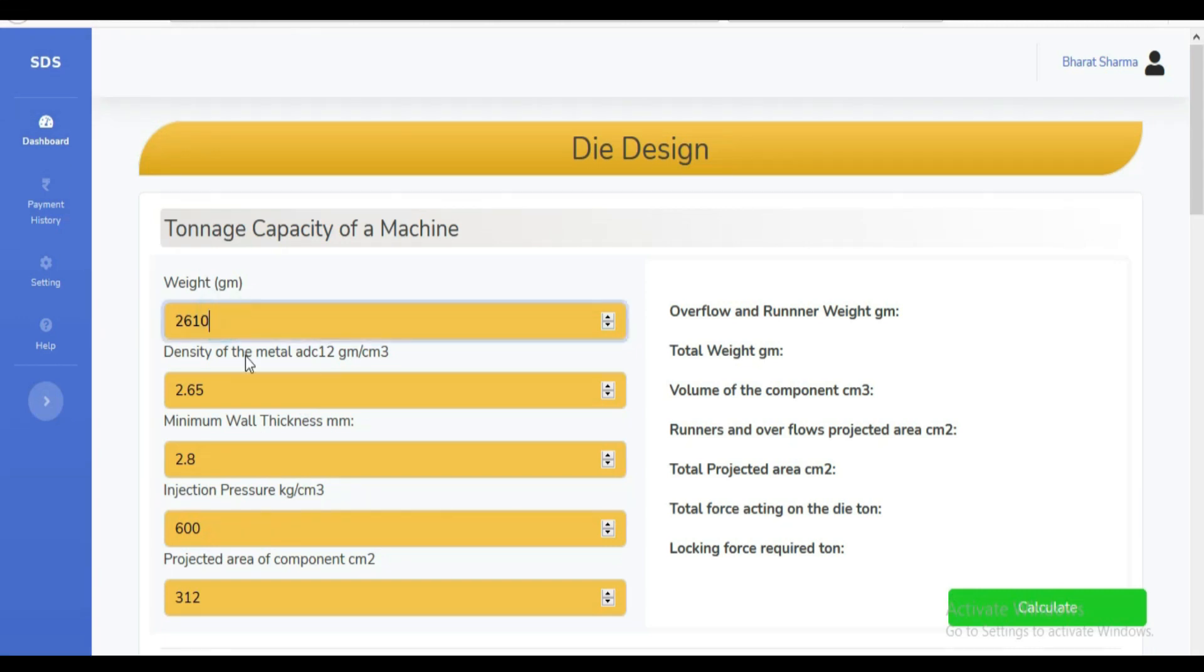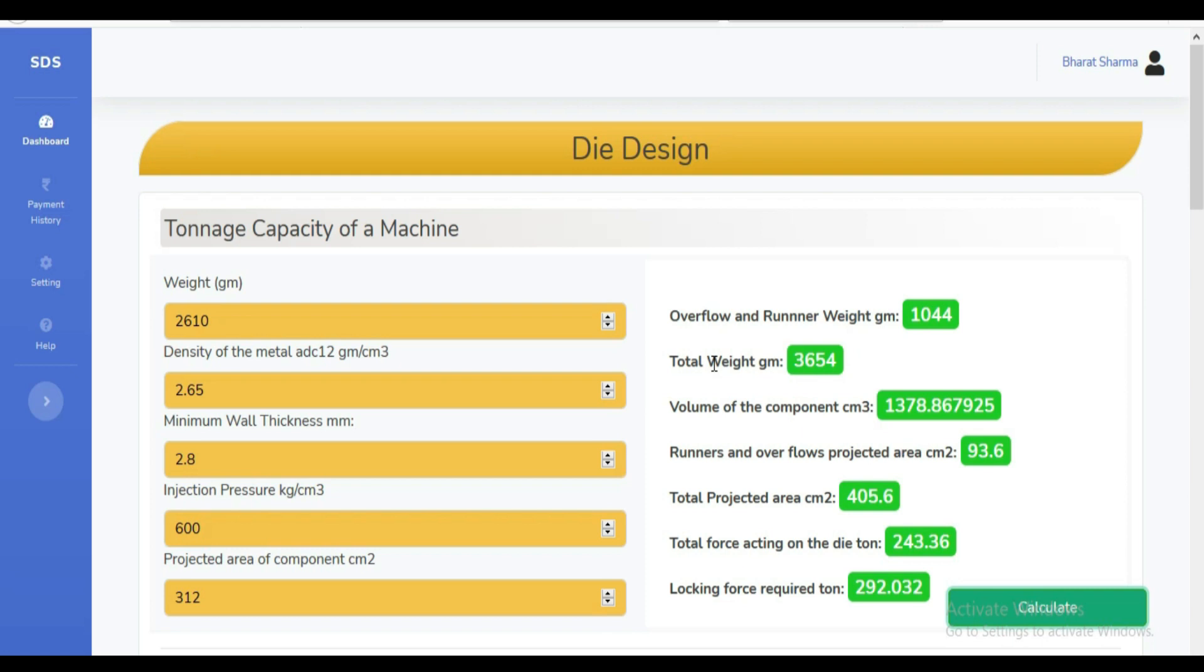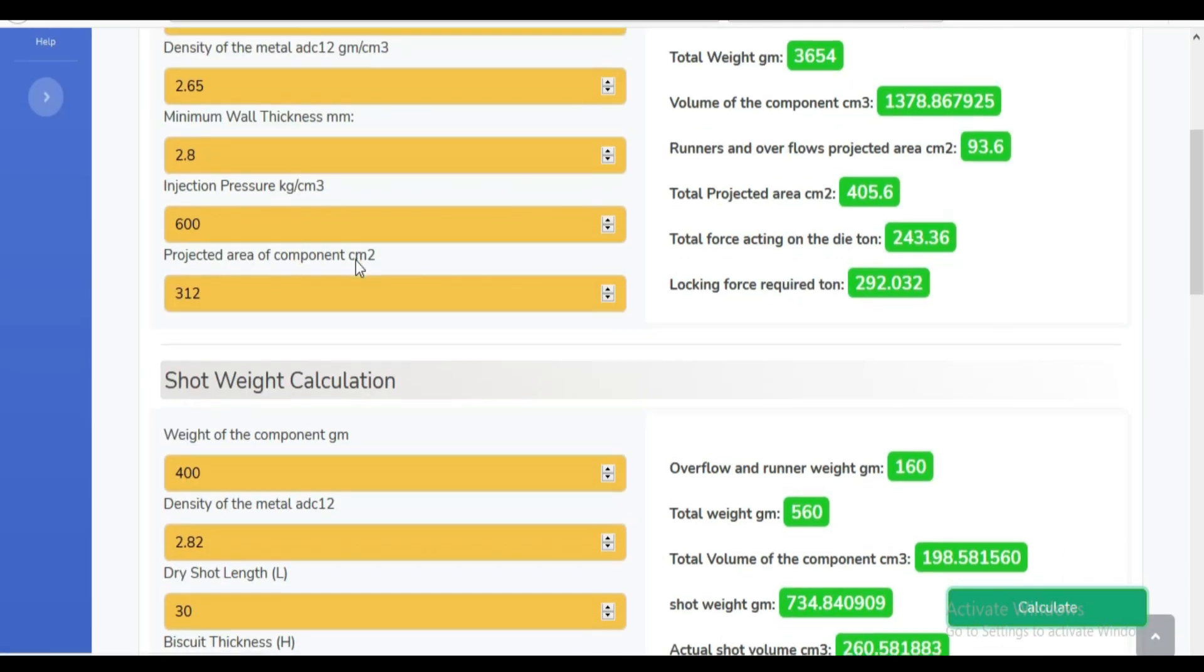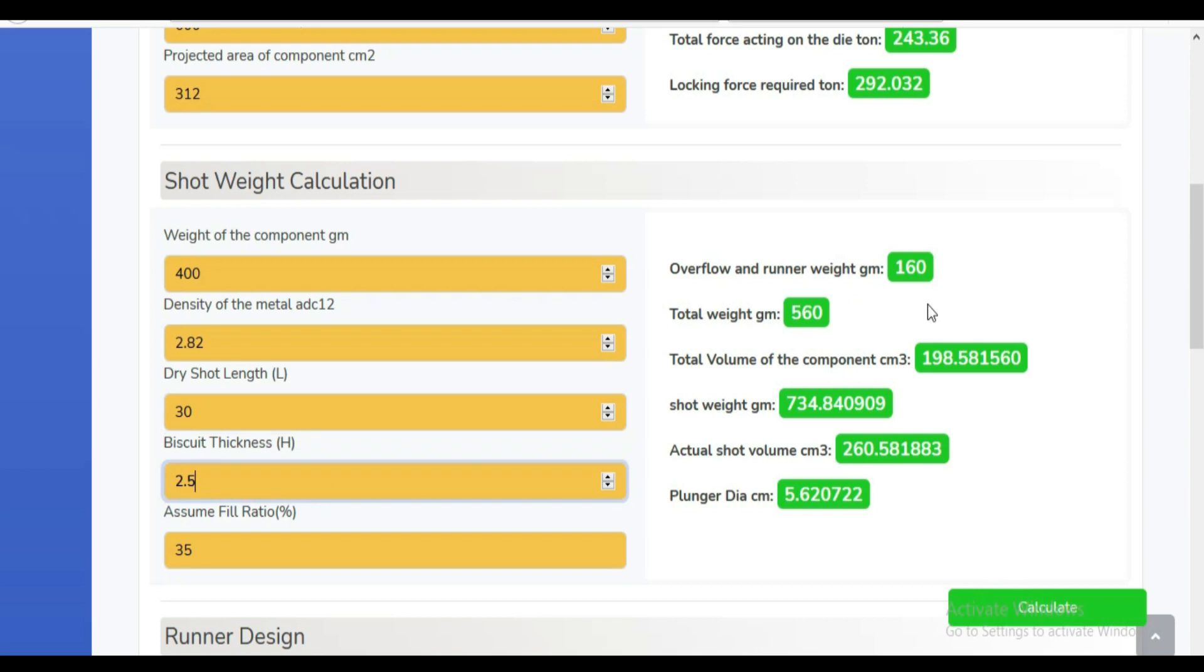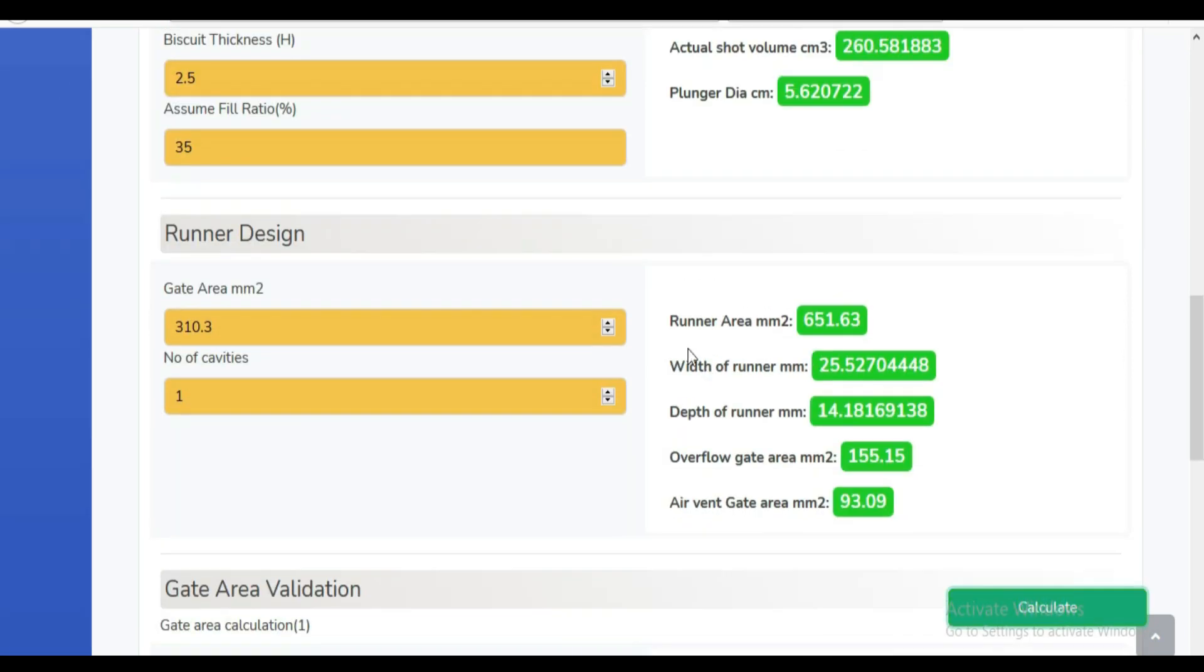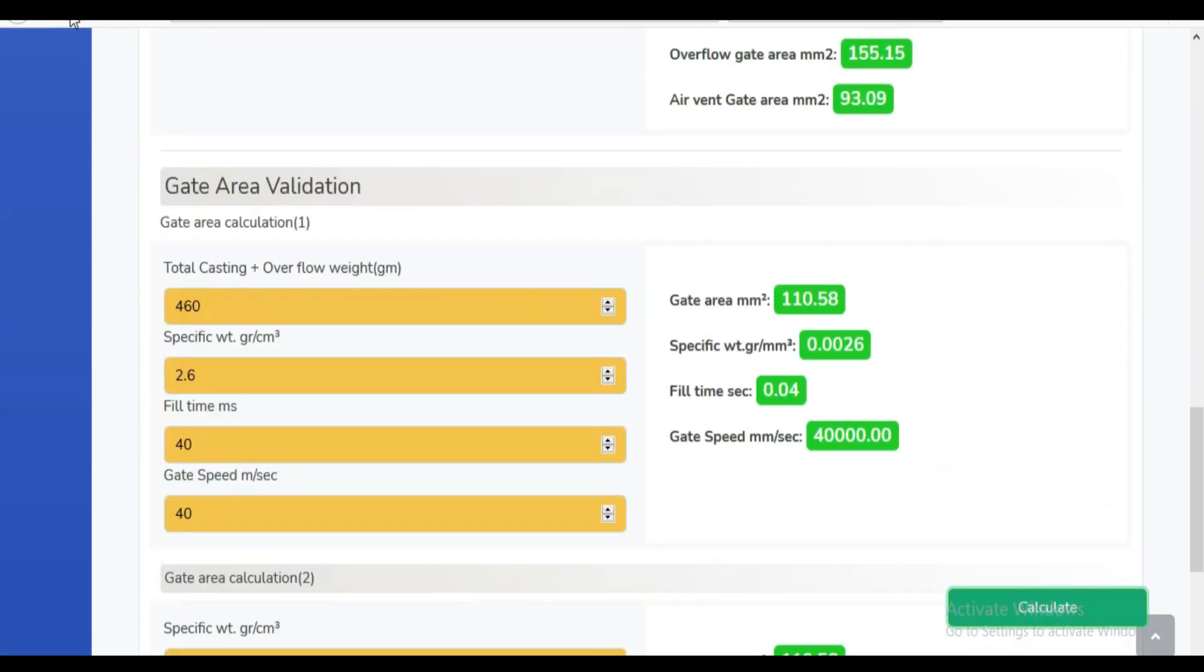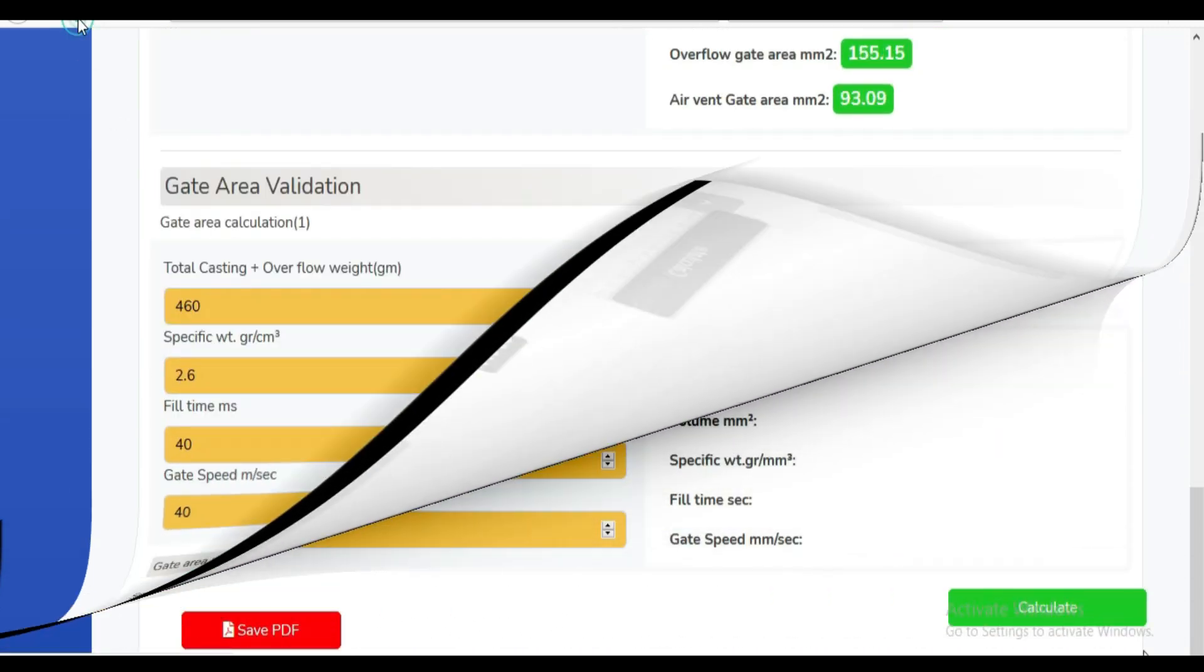In the die design tool, you can easily calculate tonnage capacity of the machine by just putting few input values. After one click, you will get all design values. Here you can calculate the shot weight, design your plunger diameter, runner, gate area. You can also validate your gate area.